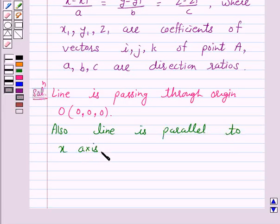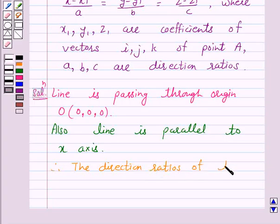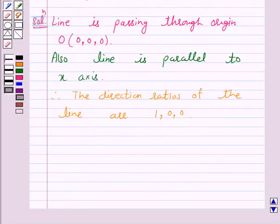So the direction ratios of the line are 1, 0, 0. So according to our key idea, the Cartesian form of the equation of a line